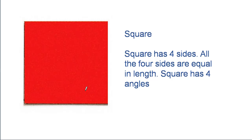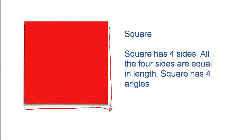Square. Square has four sides. All the four sides are equal in length. Square also has four angles.